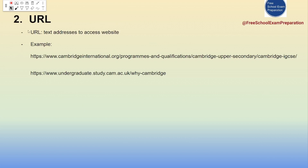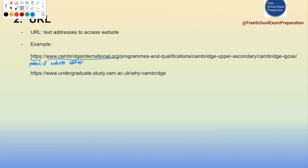A URL is a text address that allows users to access websites. Let's look at the IGCSE official website as an example. The first part — HTTP — is the protocol, followed by a colon and double slash. Then 'www' through to '.org' is the website address. After the slash, 'programs' and 'programs and qualification' are the path. Finally, the last part is the file name.